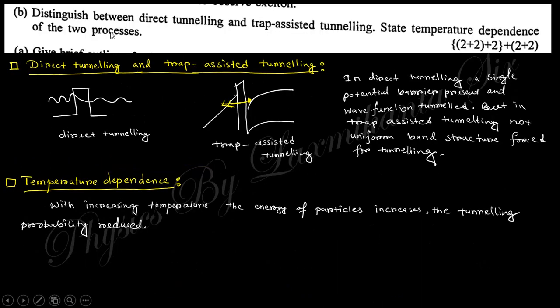Next question is distinguish between direct tunneling and trap-assisted tunneling. In direct tunneling, there is a potential barrier which is used to tunnel the wave function of a particle. In trap-assisted tunneling, the energy band diagram is such that the particle is trapped within a region where the potential is at lowest value, then it tunnels from it.